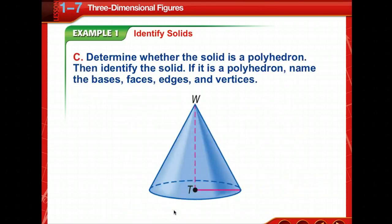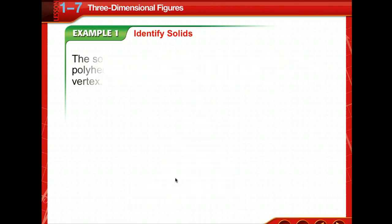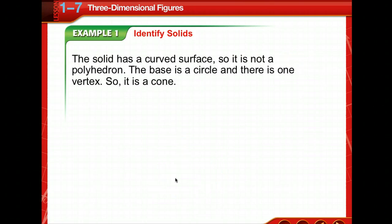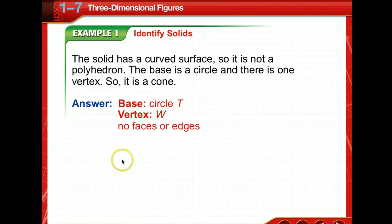How about this one? What shape is that base? The solid has a curved surface, so it is not a polyhedron. The base is a circle and there's one vertex, so it's a cone. The base is a circle. It has one vertex at the top, but it has no faces or edges.